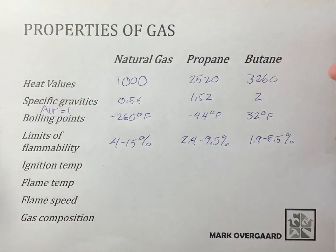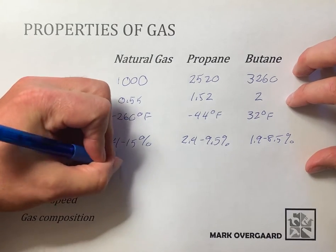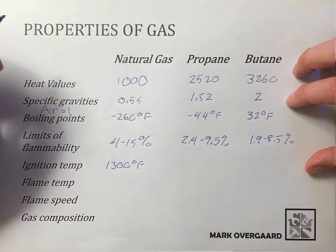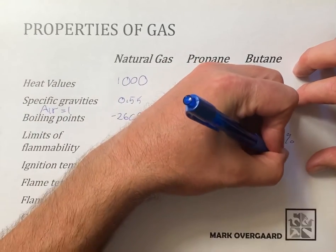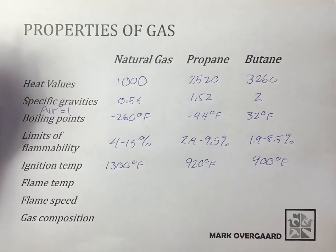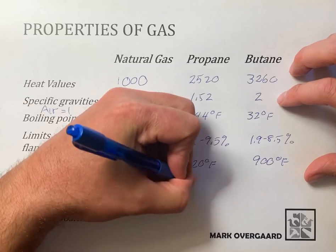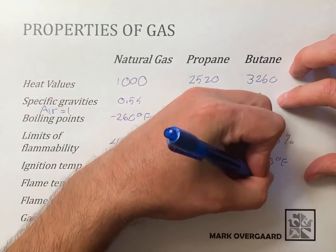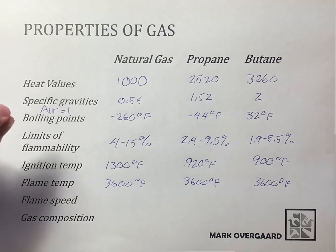Ignition temperature — this is what you need from some type of heat source, a spark, a hot surface igniter, or flame, to light the gas. For natural gas it's 1,300°F. Propane is 920°F, and butane is 900°F. Now, what does the flame temperature come up to? For all three gases it's exactly the same: 3,600°F. These are all in Fahrenheit; you can find Celsius equivalents in the metric tables in Annex I.